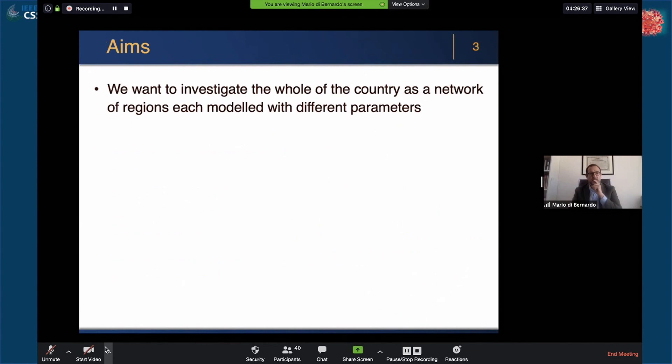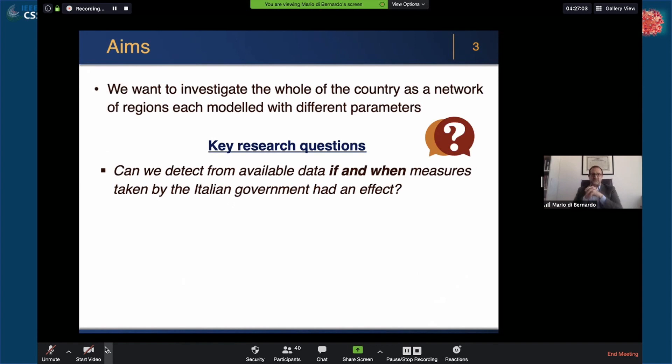So we tried to tackle this problem. Our crucial overarching goal is trying to investigate the whole country as a network of regions, each modeled with different parameters. What are the motivating key research questions? I must say this is work we started over the past three or four weeks, so this is an overarching goal and I'll show you our preliminary results today.